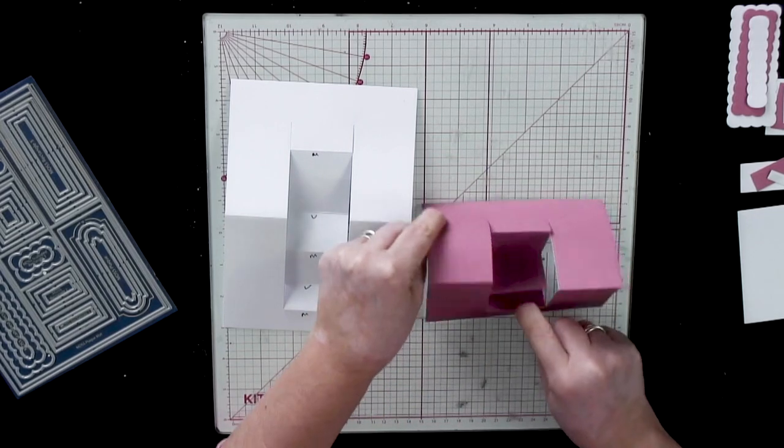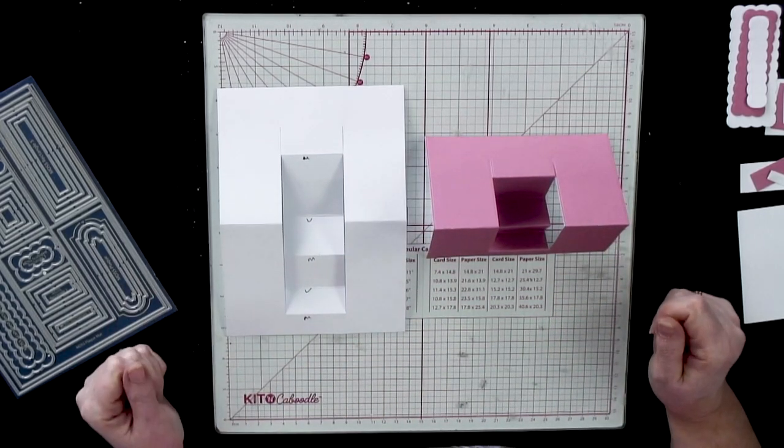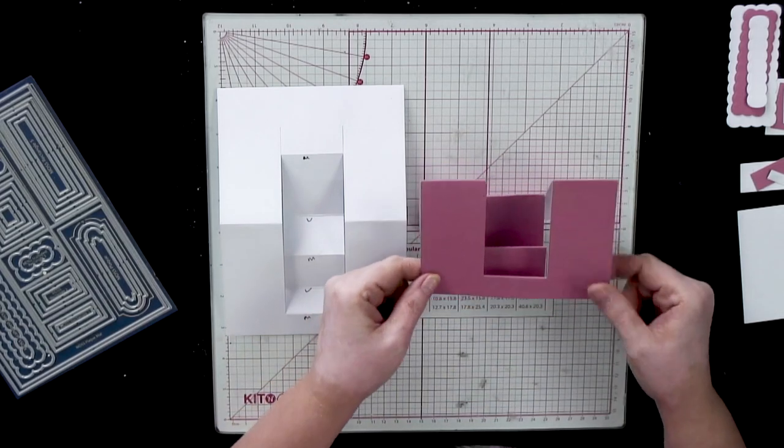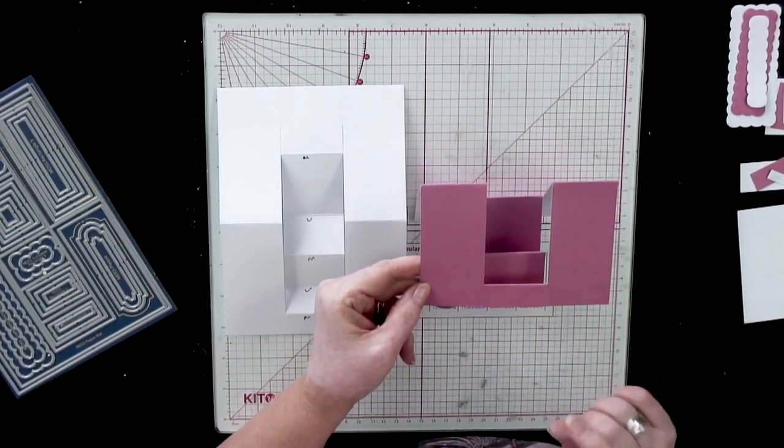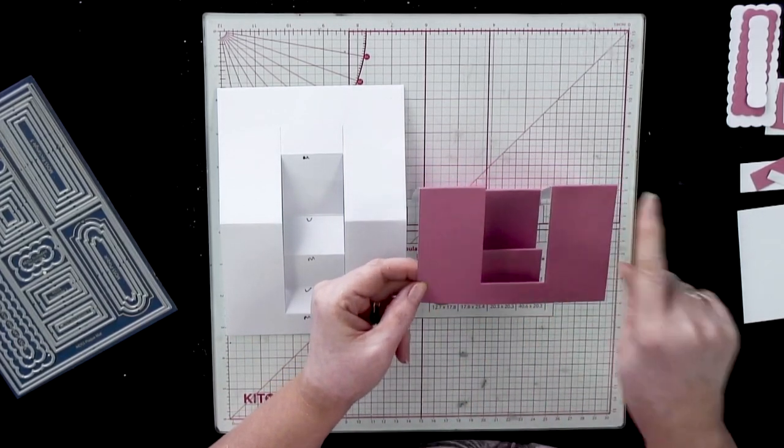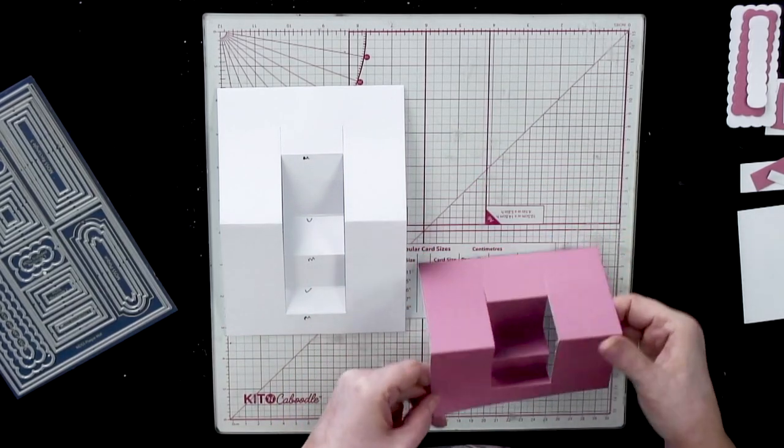So when it stands up, this is the shape that we're actually looking at. We've then got lots and lots of layers here to be able to put mats and layers on. We've got a lot that we can work with.